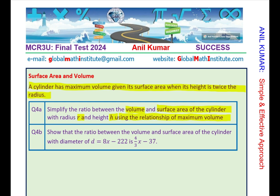Part B is show that the ratio between the volume and the surface area of the cylinder with diameter given to you as 8x - 222 is 4 by 3x - 37. These questions are also for IB students who in grade 10 take MCR 3U advanced function courses.